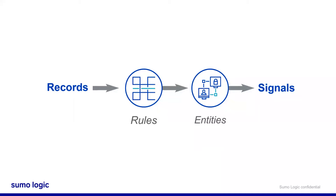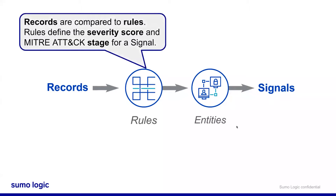Each record ingested into Cloud SIM is going to be compared to hundreds of built-in and custom rules. If a rule triggers, an entity is extracted and a signal is created. If a record matches the criteria specified in a rule, then Cloud SIM creates a signal. The severity is a number between 1 and 10 that tells Cloud SIM how serious a potential threat is. When a signal is created, it's going to contain a name, an entity, a severity, a stage, and a description. A signal always contains, at a minimum, an entity and a severity. The data is defined by the rule and is later used by Cloud SIM's Insight Engine's algorithm.